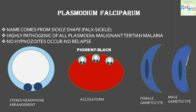Plasmodium falciparum — its name comes from sickle shape; falx means sickle. It is the most highly pathogenic of all plasmodia and is responsible for malignant tertian malaria. It does not contain hypnozoites, so there is no relapse of fever. The ring form is binucleate and gives a stereo headphone arrangement. Inside the RBCs, the ring forms are situated around the periphery, giving rise to a particular accolé form.